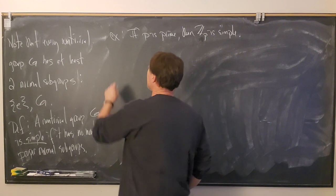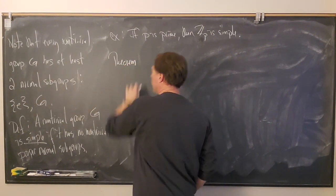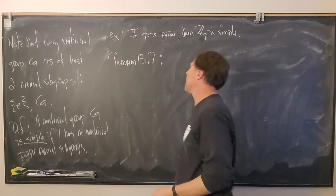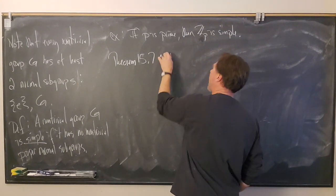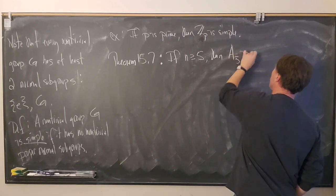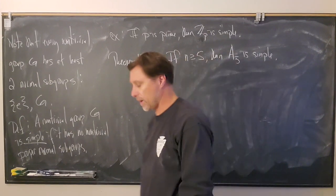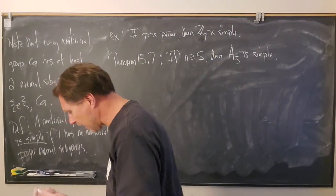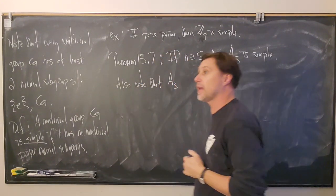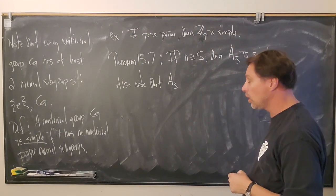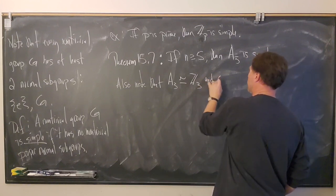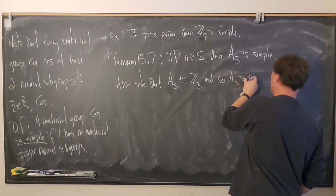Another example — I'll state this as Theorem 15.7, though we won't prove it. This theorem is useful in Galois theory. If n is greater than or equal to 5, then the alternating group A_n is simple. Also note that A_3 has order 3!/2 = 3, so it's isomorphic to Z_3 and hence simple. So the only alternating group that remains is A_4.